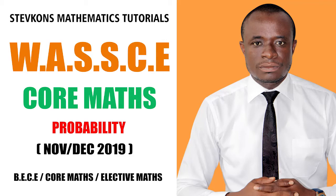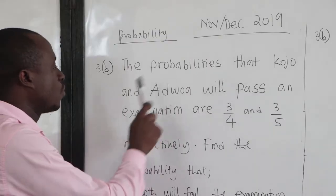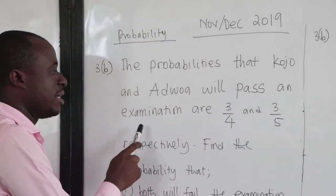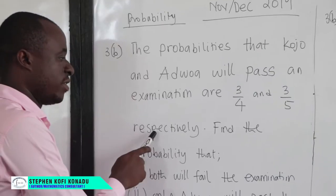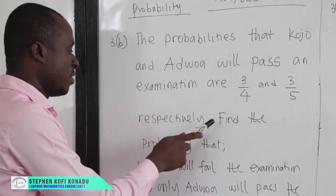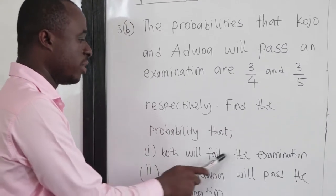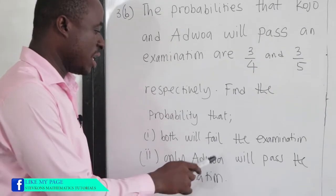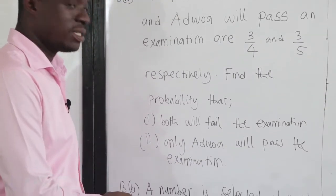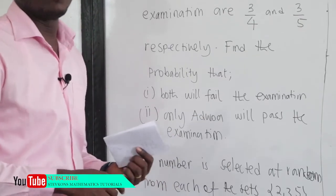All the probability questions that came under Nobject 2019. The probabilities that Kujou and Ajuwa will pass an examination are 3 over 4 and 3 over 5 respectively. We have been told to find the probability that both will fail the examination, and then only Ajuwa will pass the examination. Clearly, this is an independent event.